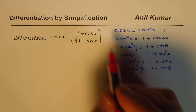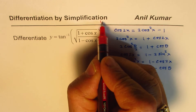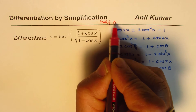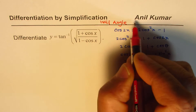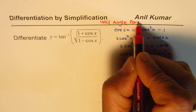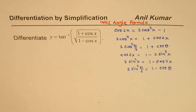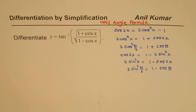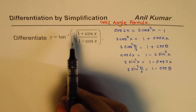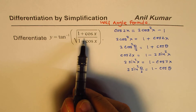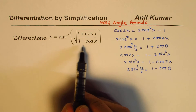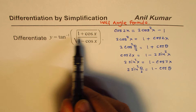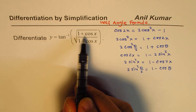So we derived the half-angle formulas. The key idea is that we have tan inverse of something, and we want to write that something in tan form — because if we have tan inverse of tan, we simply get the angle, and differentiation becomes simple.